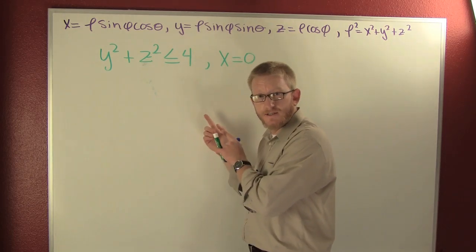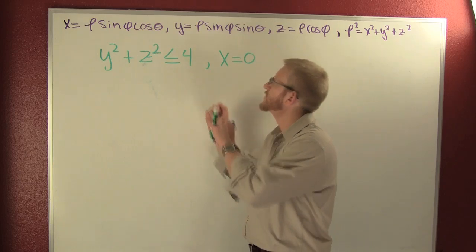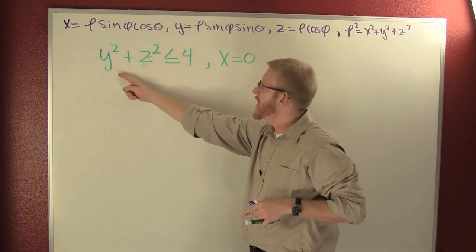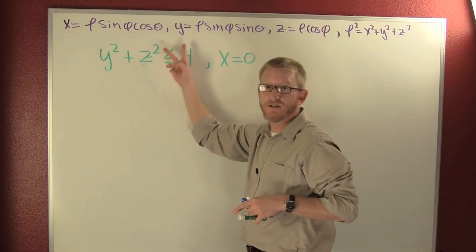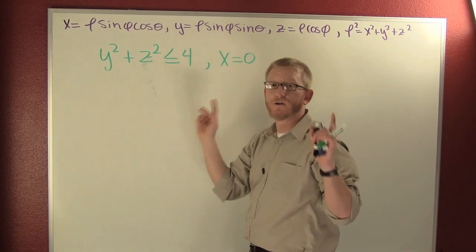Now let's describe this in spherical coordinates. What do I have? I have y squared plus z squared is smaller than or equal to 4.